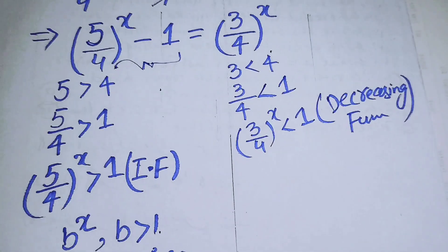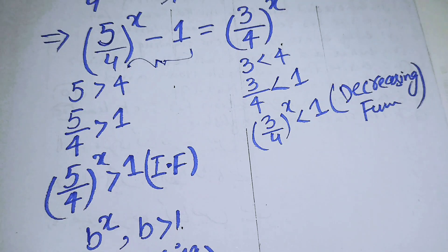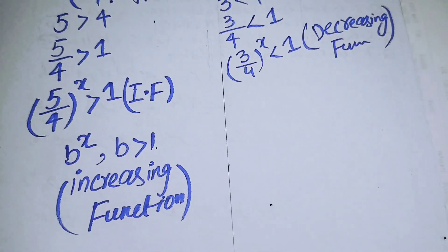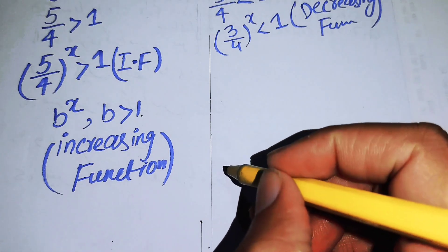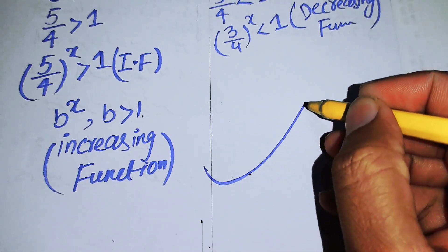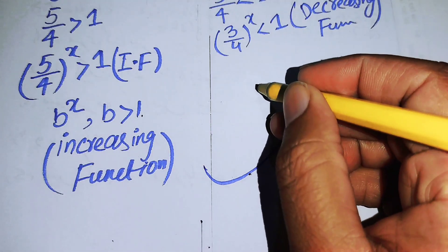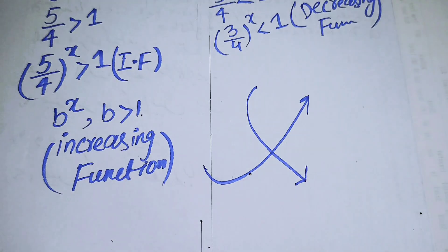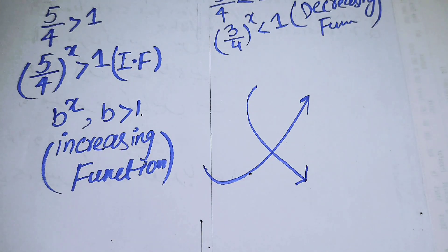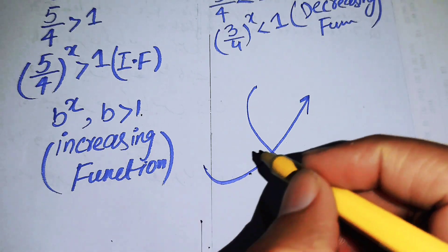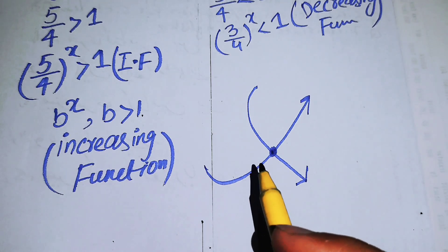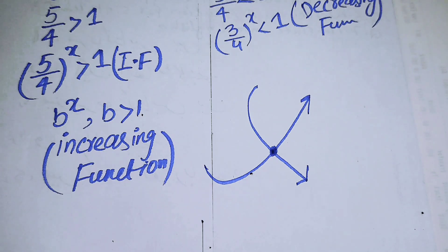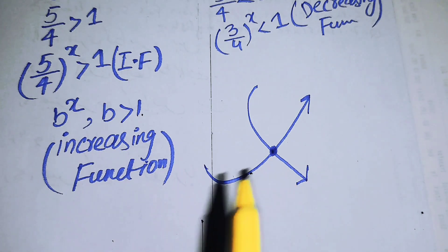So the left-hand side is an increasing function and the right-hand side is a decreasing function. When you draw these graphically, the increasing function goes upward and the decreasing function goes downward, and they intersect at only one point. That point of intersection is the unique solution of this problem.